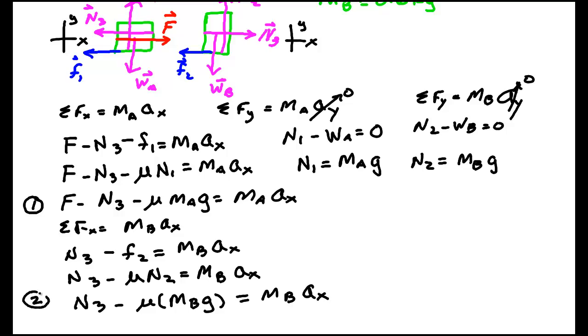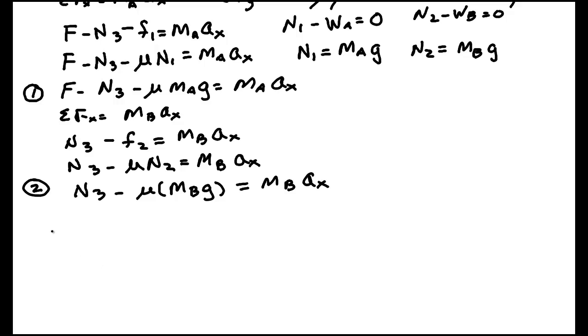Now, the easy way to deal with equation one and two, because of the third law, this N3 should have a sign difference between equation one and equation two. It should have the same magnitude, be the same type, but have a different sign because it points in the opposite direction. So when the easiest way to eliminate N3, this force between the two objects, is simply to add these two equations together. Then, the minus N3 cancels the positive N3. So we're going to do that.